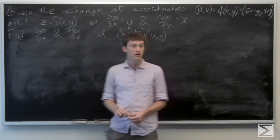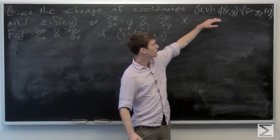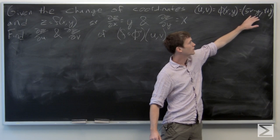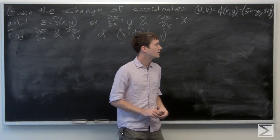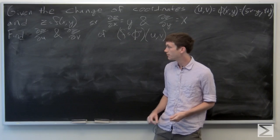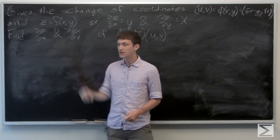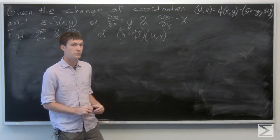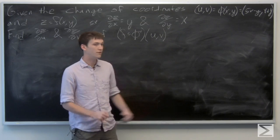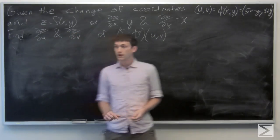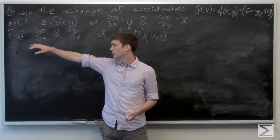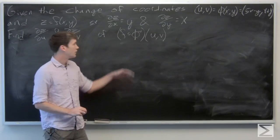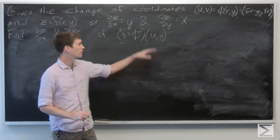In this problem, we're given a change of coordinates uv equals the function phi of x, y, defined by the first component being 5x minus y and the second component being x plus y. We're told that there's a function z equals f of x, y, such that the partial derivative of z with respect to x is y and the partial derivative of z with respect to y is x. We want to find the partial derivative of z with respect to u and the partial derivative of z with respect to v of the function f composed with phi inverse of uv.